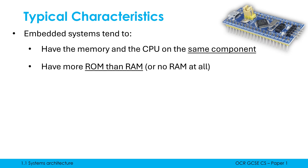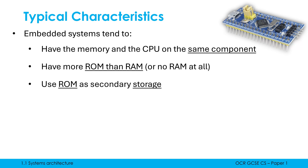We'll look at ROM and RAM properly in a future video. In an embedded system, there'll often be more ROM than RAM, or potentially no RAM at all, which is the opposite of non-embedded systems. Non-embedded systems typically have a much bigger RAM than ROM. Embedded systems might use more ROM because ROM is cheaper than RAM — it is slower, but that might not be a concern. We might also have more ROM than RAM because we are using ROM as our storage, which you would never do in a non-embedded system.